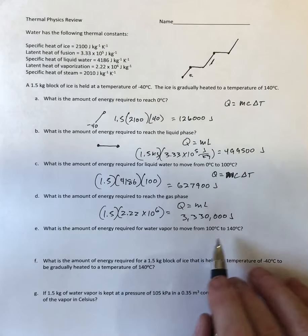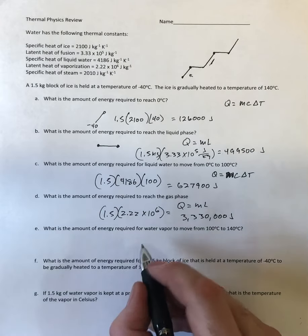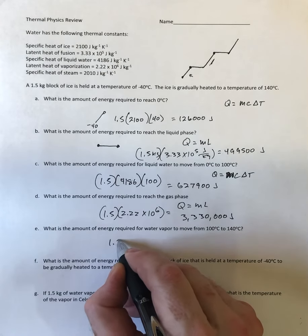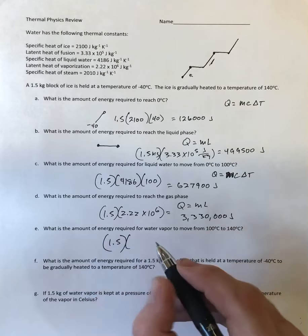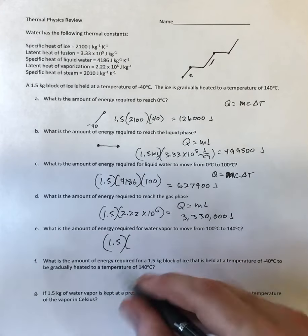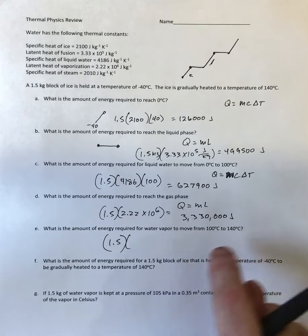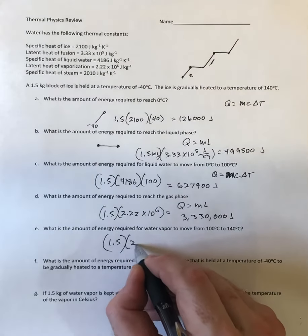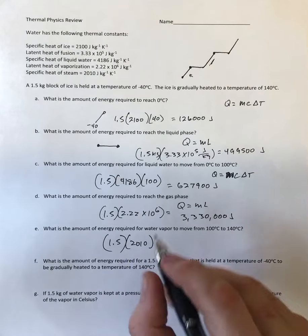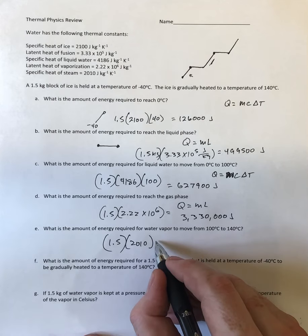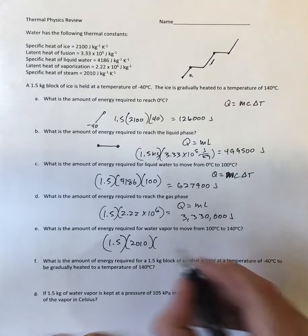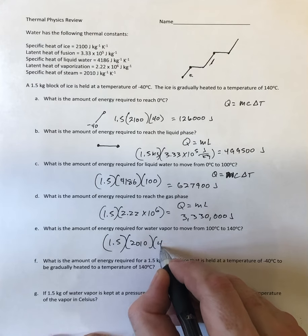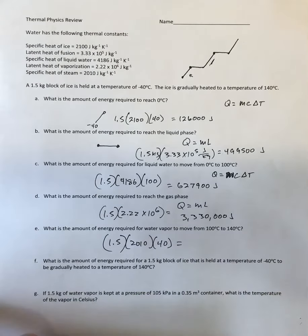And then the last one, what's the amount of energy to go from 100 to 140. So this is 1.5 times, and since my temperature has changed I'm going to use Q equals M C delta T in this case, times my specific heat of 2010 joules over kilograms Kelvin, and then my temperature change was 140 minus 100 so 40.